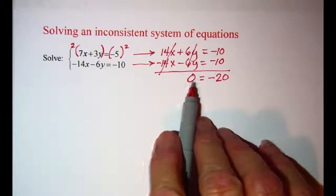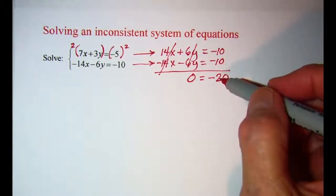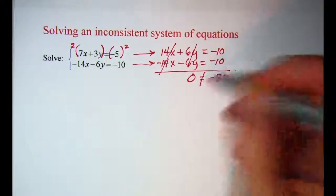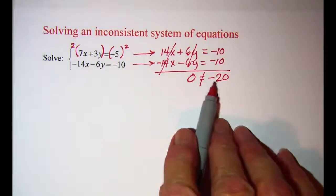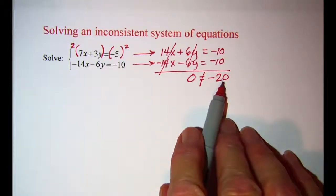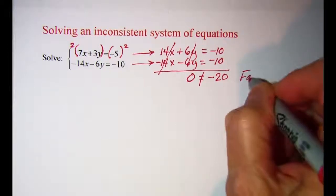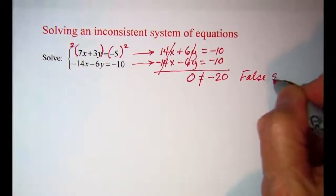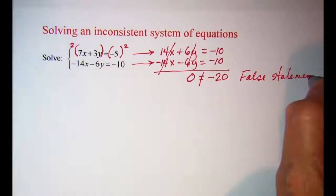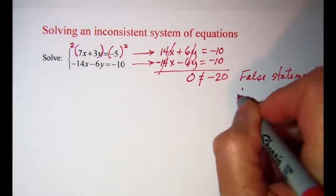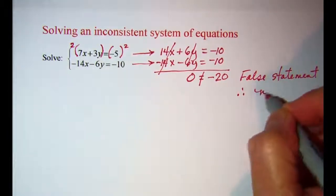Whenever you come up with an obviously false statement, because 0 does not equal negative 20, this is a false statement. Therefore, no solution.